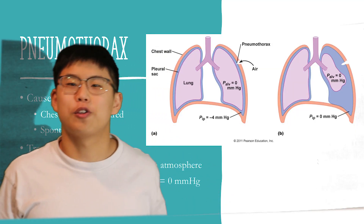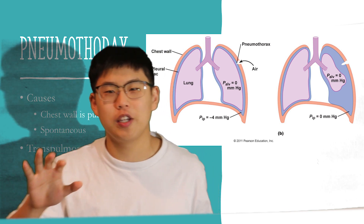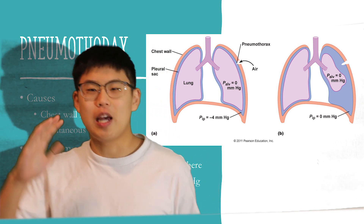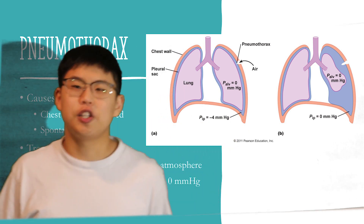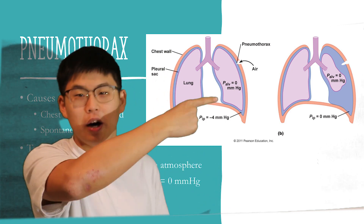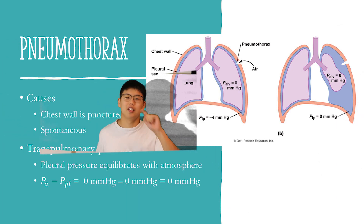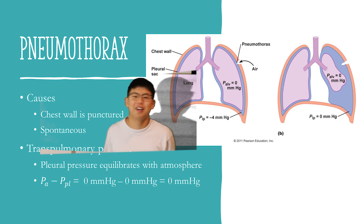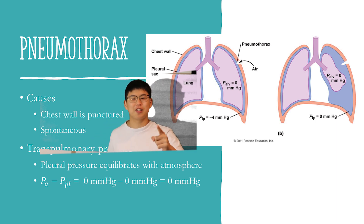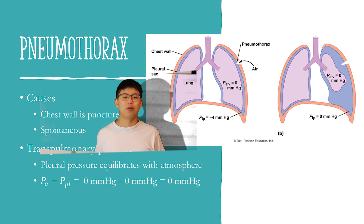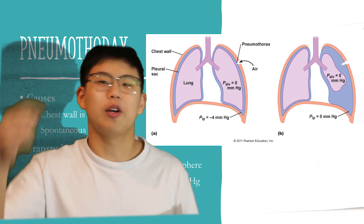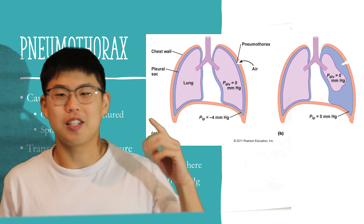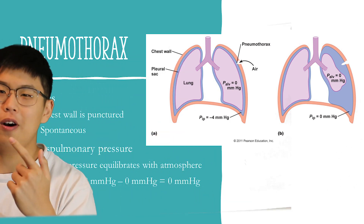Now let's look at a clinical application: pneumothorax. Pneumothorax is a condition where the surface tension of the pleural space breaks and the lungs separate from the chest wall. This is typically caused by a chest wall puncture, but in some cases the lung can also spontaneously separate with a cough — this happened to one of my buddies in high school.